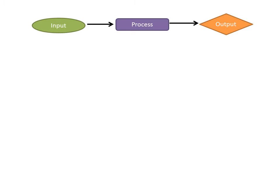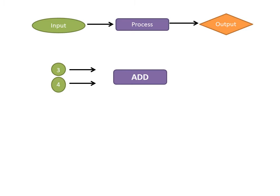Always think about it as an input, process, output function. Let's look at some examples. We have the numbers three and four — those are our input values, which means the same thing as domain. The function we're going to use is addition. When we put three and four together and add them, the output is seven. So this function is saying three plus four equals seven.